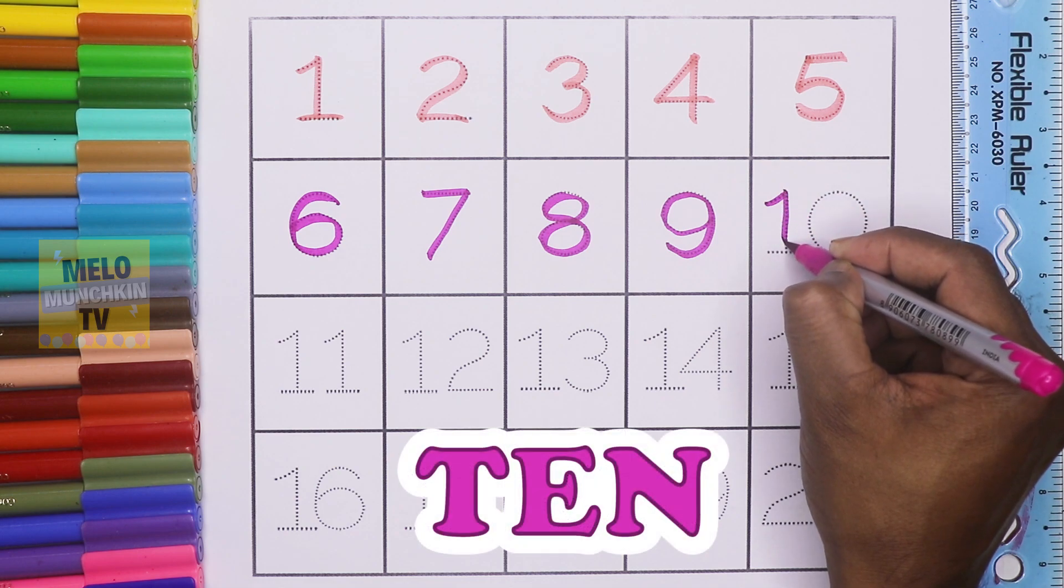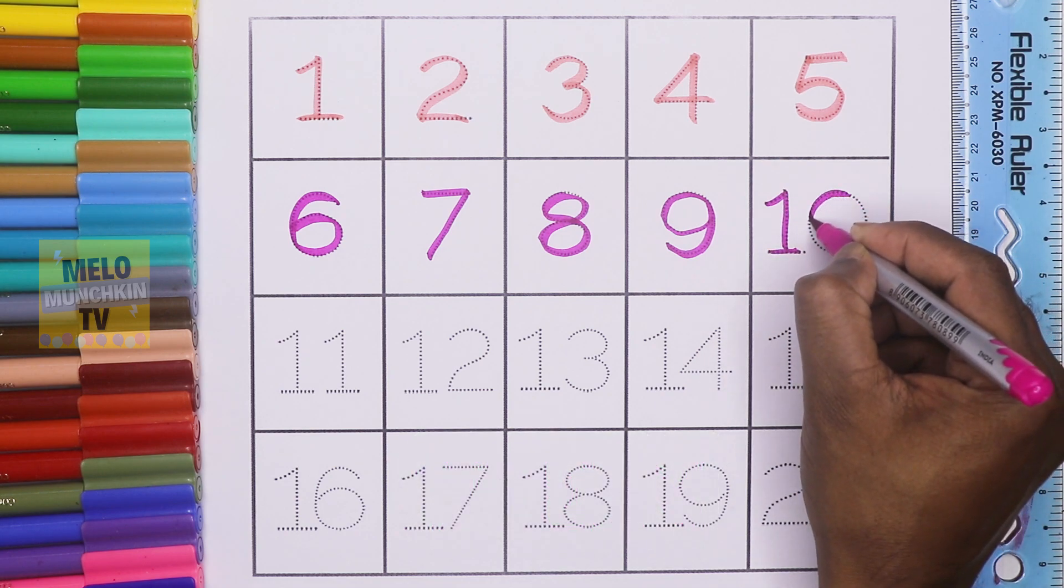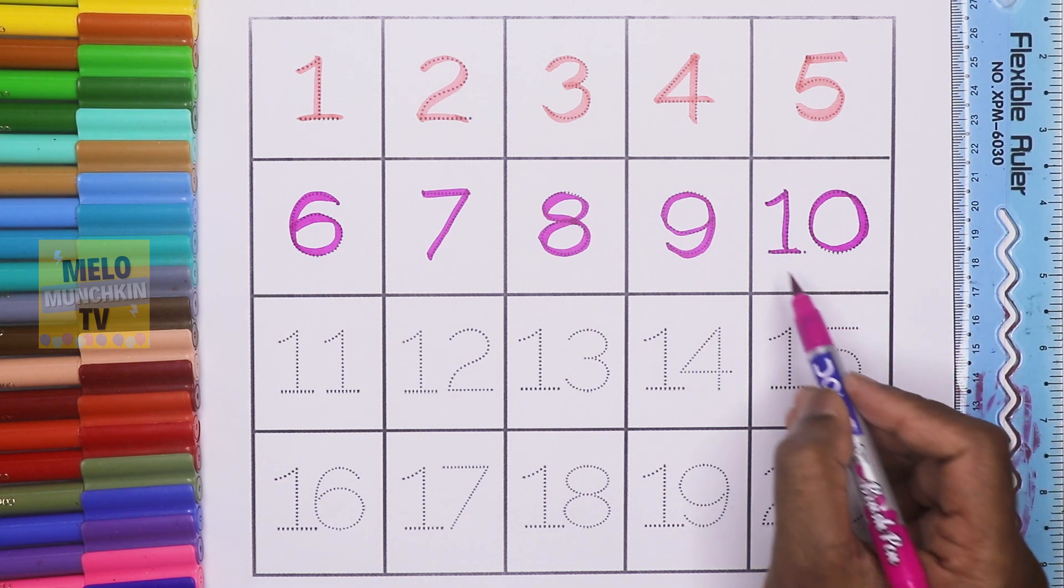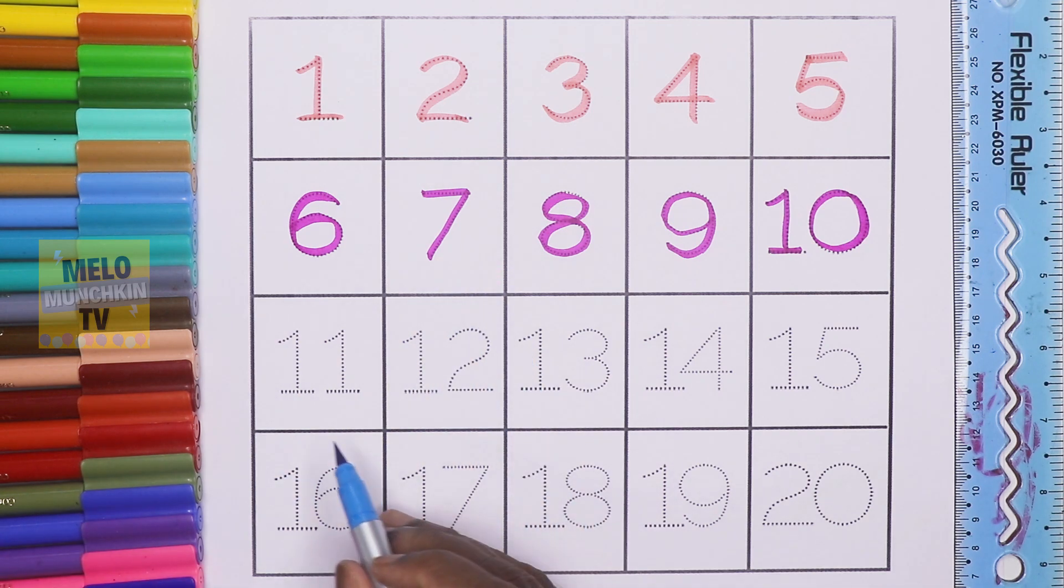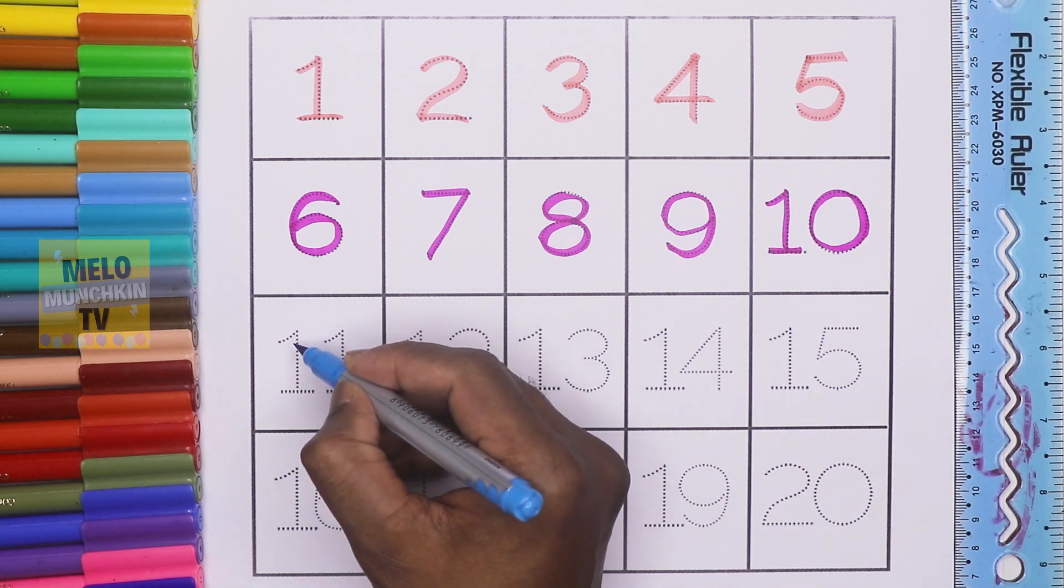This is number nine, N-I-N-E, 9. This is number ten, T-E-N, 10. Next, I'll take light blue color to write the third line.